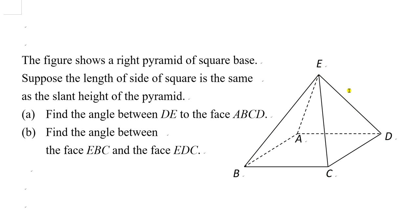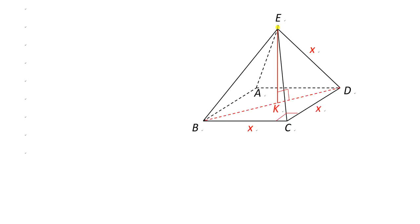For Part A, we need to find the angle between line DE and face ABCD. First, we find the common point of DE and ABCD, which is D — they intersect at point D. Next, we look at point E and project it onto face ABCD. The angle between the line and the face is the angle between DE and the projection of E. We call the projection of E onto face ABCD point K.